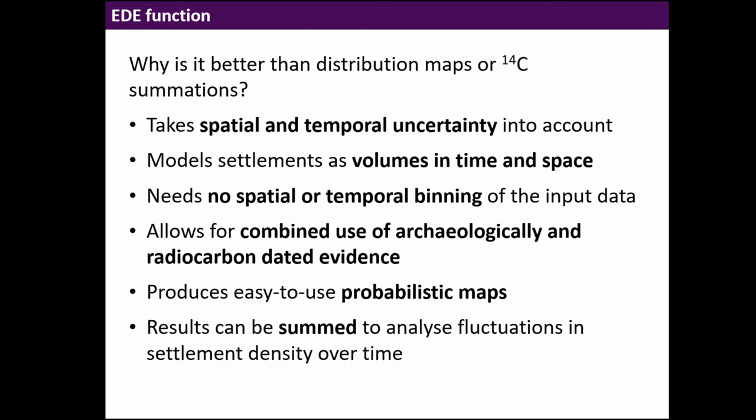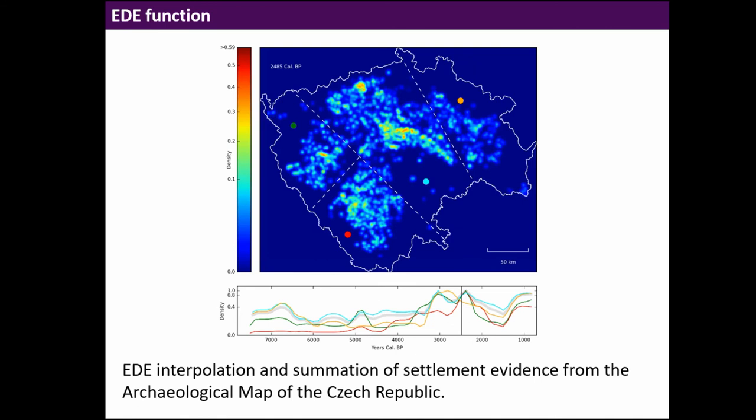It allows for combined use of archaeological theory and radiocarbon dated evidence, so we get much more evidence to work with, and produces easy to use probabilistic maps. Can be summed to analyze fluctuations in settlement density over time. This is a glimpse for Bohemia. We applied this for the whole archaeological map of the Czech Republic and were able to study how settlement density changed over time in different regions. There were quite interesting regional variations.